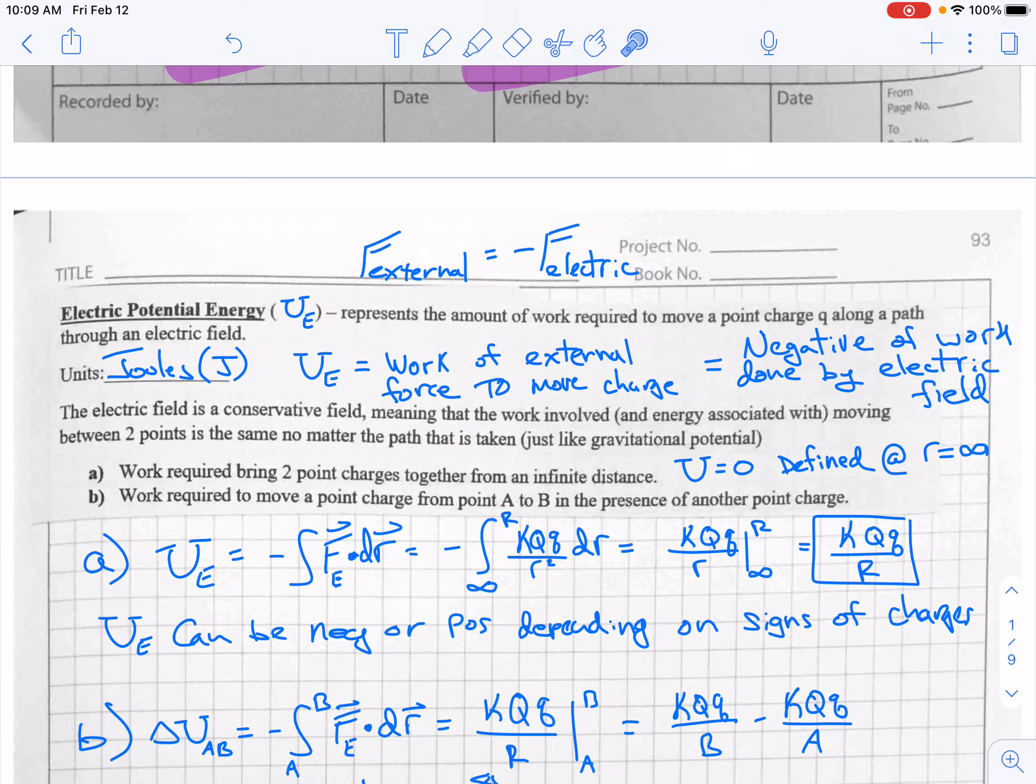Potential energy is for a conservative force like gravity or electric field. The amount of energy stored up in the field or released by the field is related to the amount of work required to move something from one point to another against the conservative field or with it. We say against but it could be in the same direction.